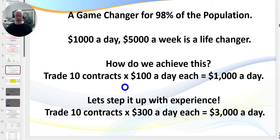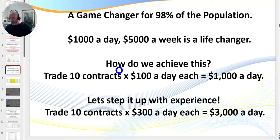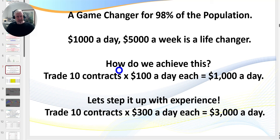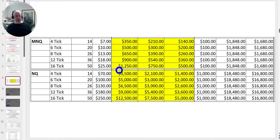You'll hear me talk about trading ten contracts, netting $100 a day per contract, which is $1,000 a day. On the market I'm mainly reviewing today I was after $300 a day per contract, so you can literally create your own ATM machine with experience. I want to show you a couple of live trades I just took and show you what the market is doing right now, so you can see there's no fluke. These conditions occur basically 23 hours a day. I love trading the after-hours globex session.